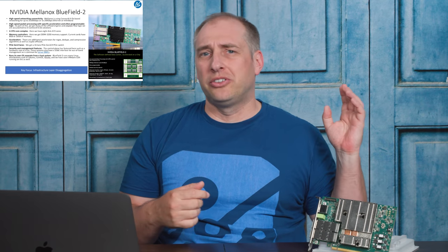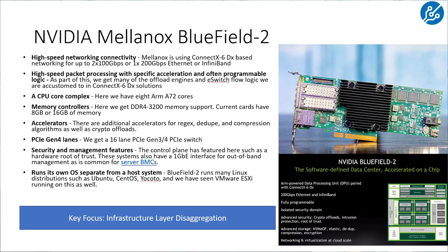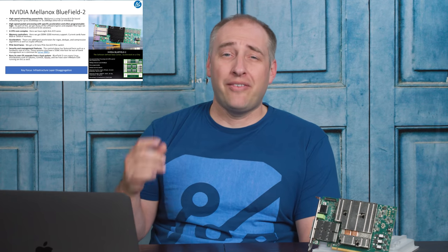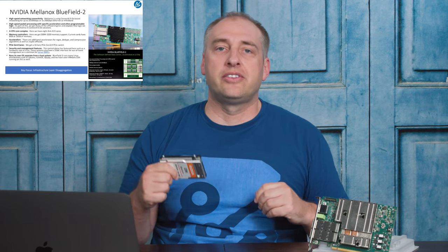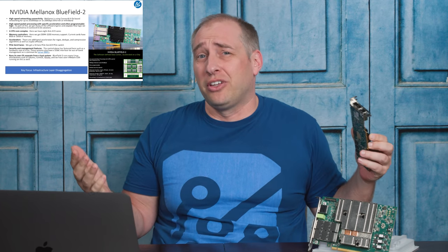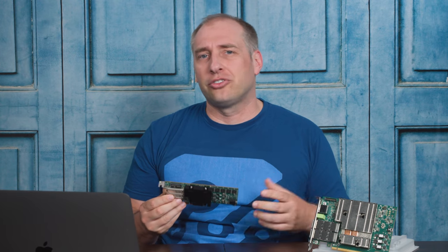Let's start with Bluefield 2 — the Nvidia Mellanox solution. It uses the ConnectX-6 DX for high-speed networking, acceleration, and packet processing. We have eight ARM A72 cores, and either 8 or 16 gigabytes of memory — this large card here is 16 GB. There are Regex accelerators, dedupe compression, and crypto offloads. We also have a PCIe switch for PCIe Gen 4, so we could take NVMe SSDs — like this one here — plug four of them into the PCIe lanes, and expose them directly to the network running NVMe over Fabric without needing a full server.